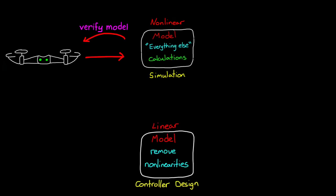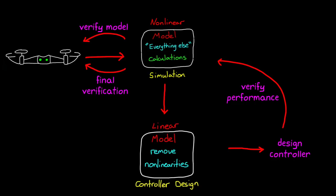And once we have a model that reflects reality, we can create a linear version of it so that we have both a linear and non-linear model. We use the linear model and our linear analysis tools to design and analyze our control system. Then we use the non-linear model to verify the performance of the control system. And the last step is that we feel confident enough to run the flight control software on the actual hardware for final verification.